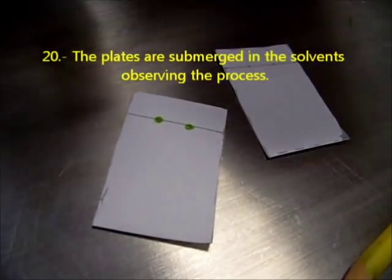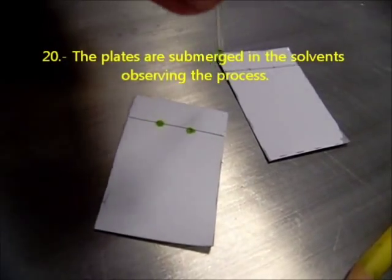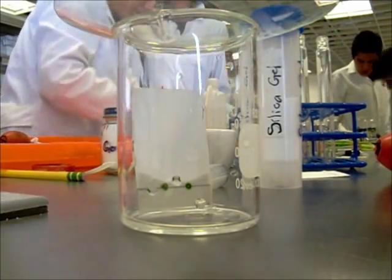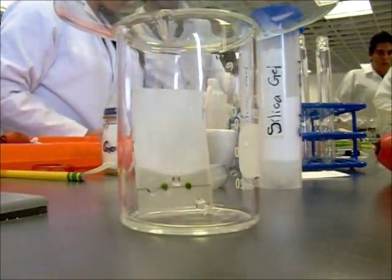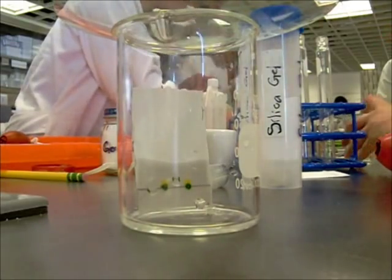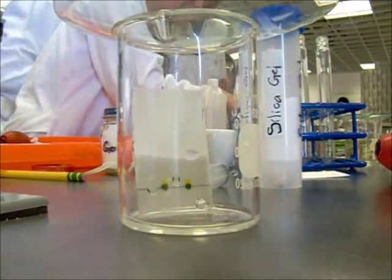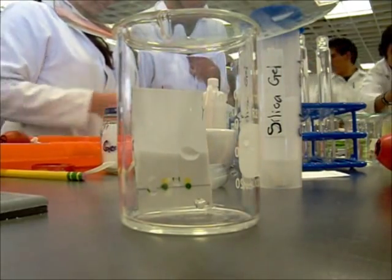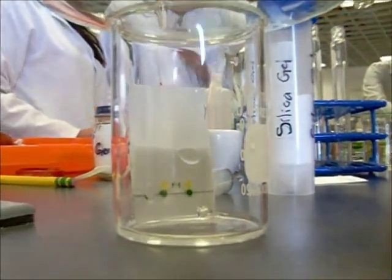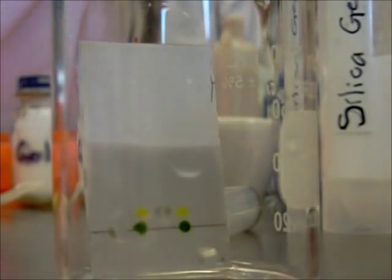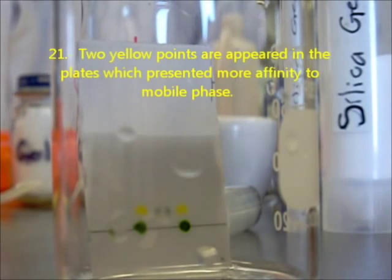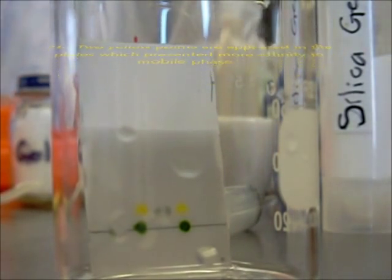The plates are submerged in the solvent, observing the process. Two yellow points appear in the plates which present more affinity to the mobile phase.